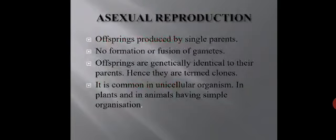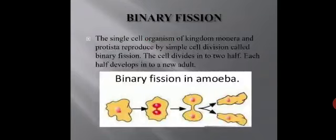Asexual reproduction is generally shown in unicellular organisms, or plants and animals with simple organization. Animals or plants with complex organization do not generally show asexual reproduction. There are various methods by which different organisms reproduce asexually. Single-celled organisms of kingdom Monera and Protista reproduce by simple cell division called binary fission.